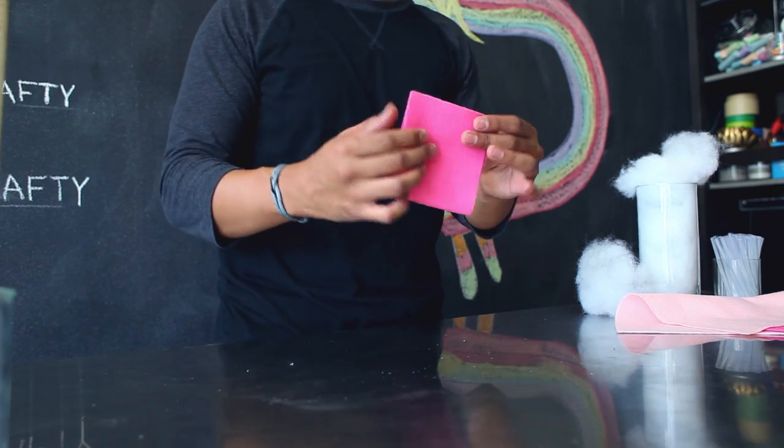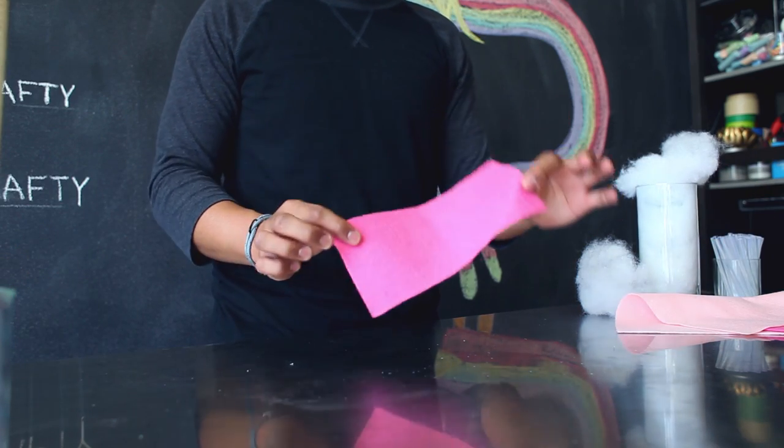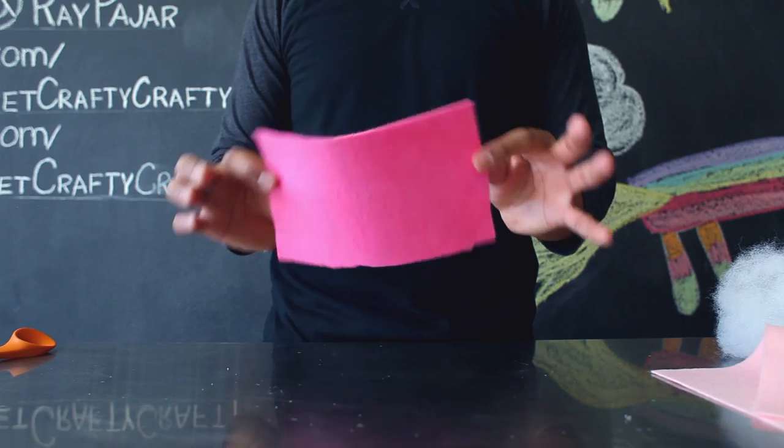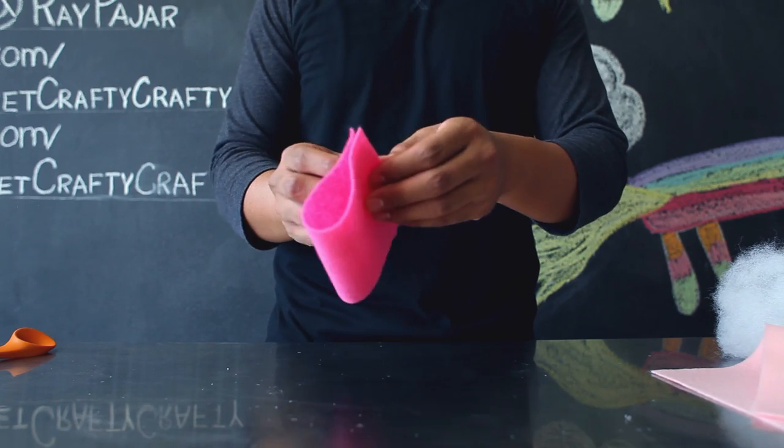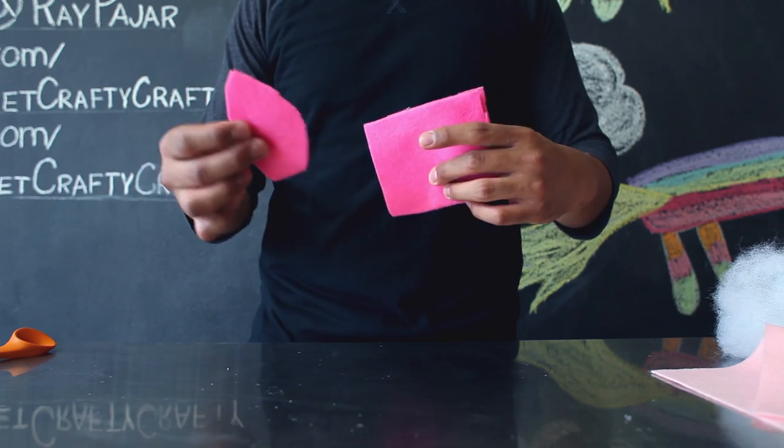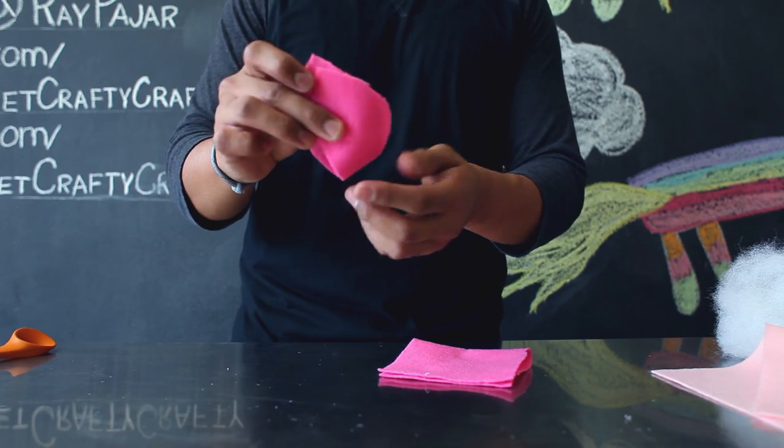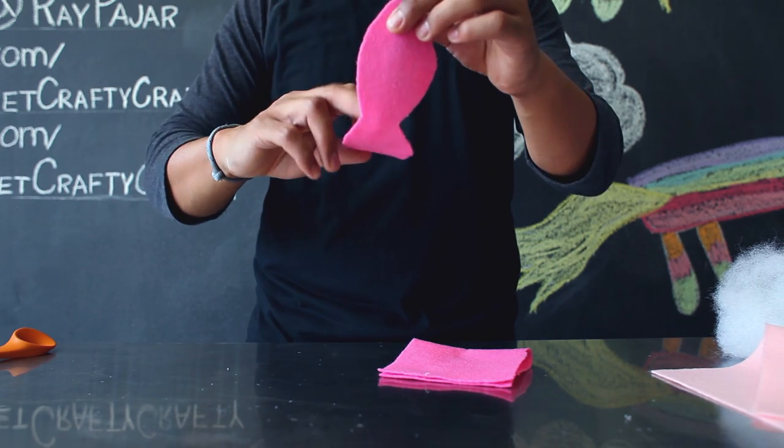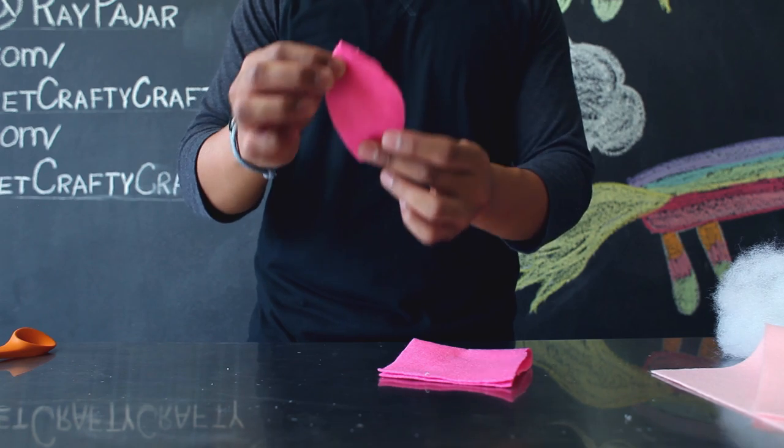You're going to take a piece of felt and you're going to create the ears for your horn. Take a rectangular piece of felt and fold it in half. You're going to cut out a shape that looks kind of like a lemon but is flat on the end where it's folded and pointy at the top.